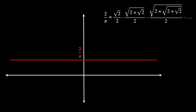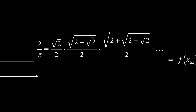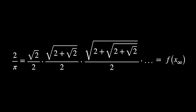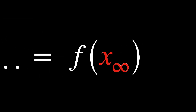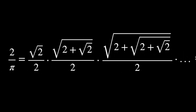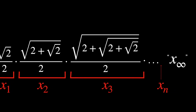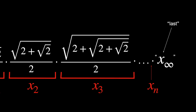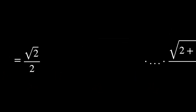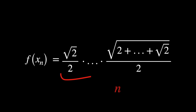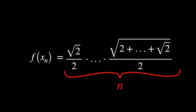We'll call it f of x-infinity. We use x-infinity because if we were to continue multiplying terms x1, x2, x3, and so on to infinity, the last term would be x-infinity. Of course this point doesn't actually exist since we'd never reach it — it is just a representation. Another way of representing this infinite process is up to n iterations.